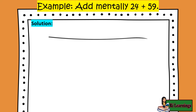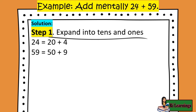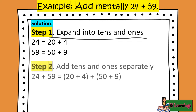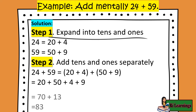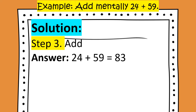Add mentally 24 plus 59. Step 1: Expand into tens and ones. 24 equals 20 plus 4; 59 equals 50 plus 9. Step 2: Add tens and ones separately. 20 plus 50 equals 70; 4 plus 9 equals 13. 70 plus 13 equals 83. Answer: 24 plus 59 equals 83.